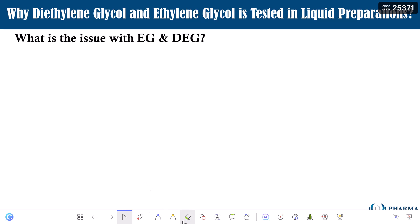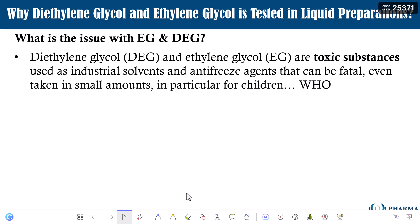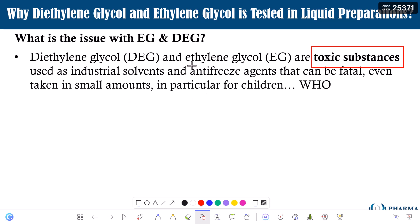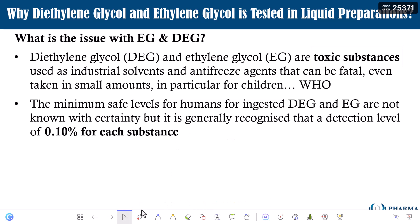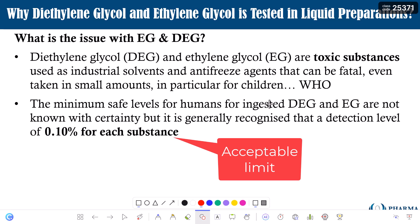What is the issue with ethylene glycol and diethylene glycol? Diethylene glycol and ethylene glycol are toxic substances used as industrial solvents and anti-freeze agents that can be fatal even when taken in small amounts, particularly for children. According to WHO, the minimum safe level for ingested diethylene glycol and ethylene glycol is not known with certainty, but it is generally recognized that a detection level of 0.1% for each substance can be considered safe for consumption.